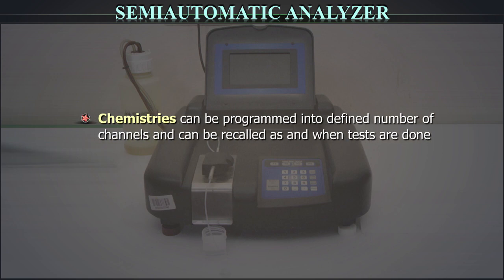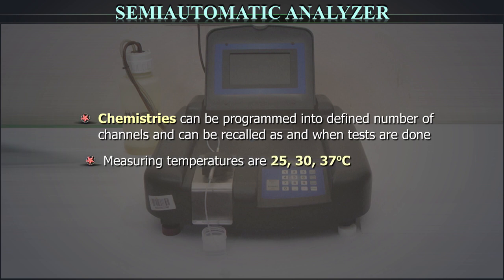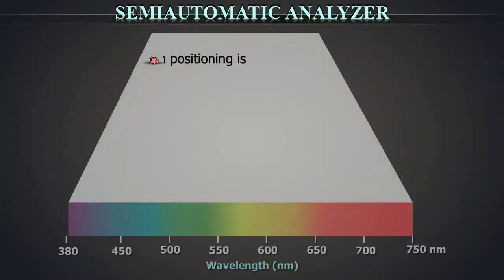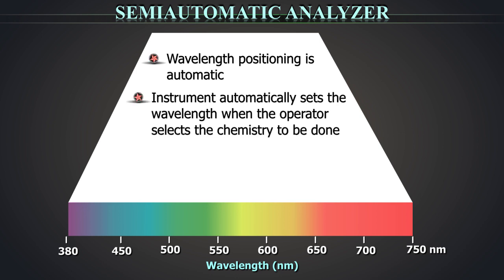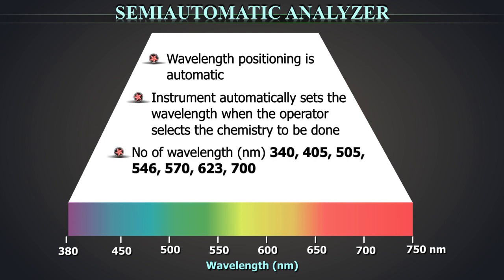Chemistries can be programmed into a defined number of channels and can be recalled as and when tests are done. Measuring temperatures are 25, 30, and 37 degrees Celsius. Wavelength positioning is automatic once programmed. The instrument automatically sets the wavelength when the operator selects the chemistry to be done. Number of wavelengths usually are 340, 405, 505, 546, 570, 623, and 700 nanometers.